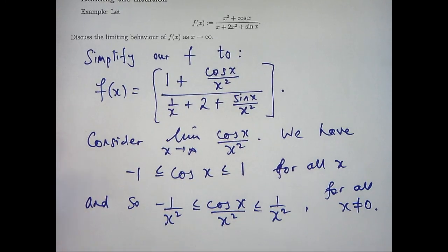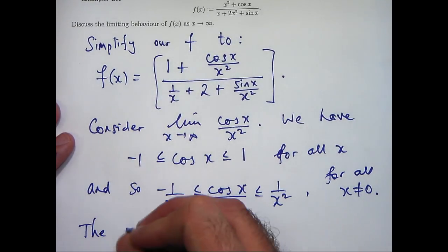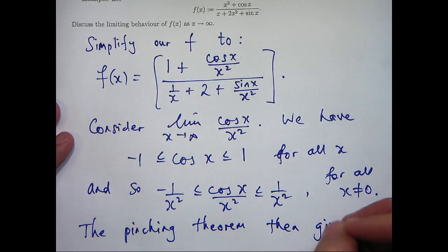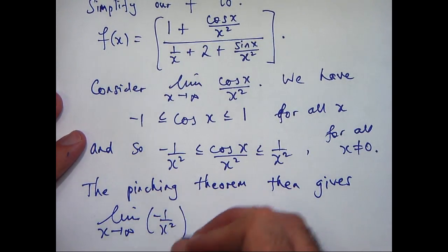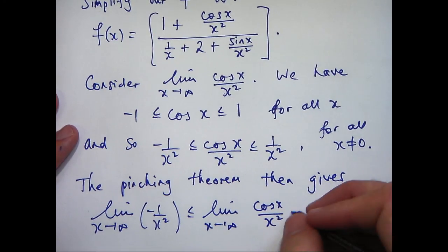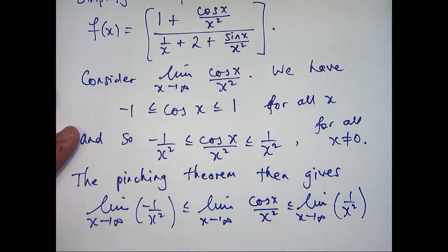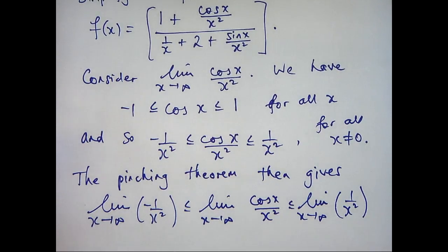Now I can take the limit here, and the pinching theorem — also called the squeeze theorem or the sandwich theorem — tells us that I can take the limit on the left, middle, and right and keep the same inequalities. The limit of minus 1/x² is 0, and the limit of 1/x² is 0, so the limit in the middle is greater than or equal to 0 and less than or equal to 0, which means it must actually equal 0.